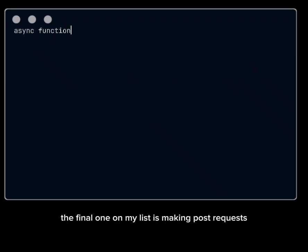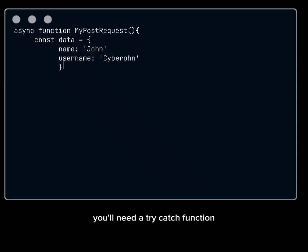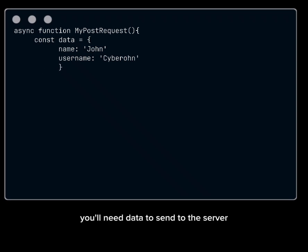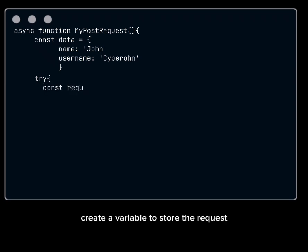The final one on my list is making POST requests with the Fetch API. Just like the GET request, you'll need a try-catch function. But before that, you'll need data to send to the server — create an object with the data you'd like to send. Now inside the try block, create a variable to store the request.